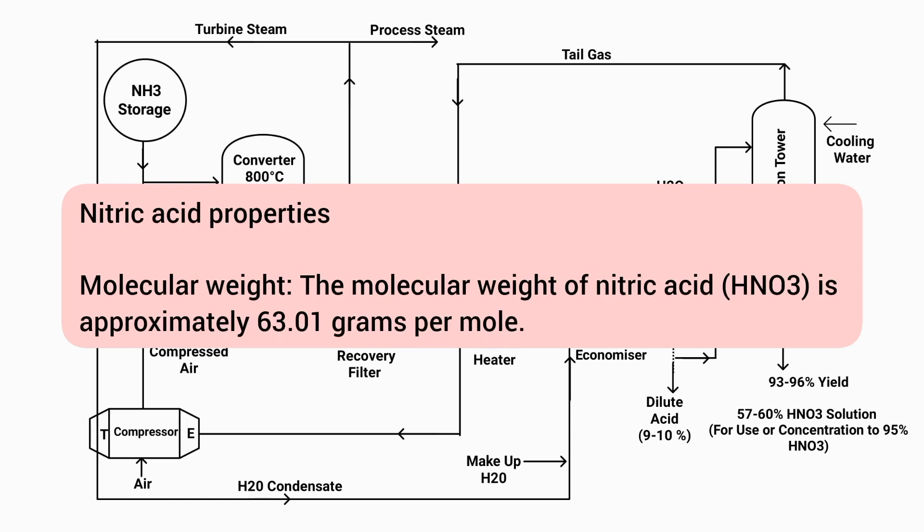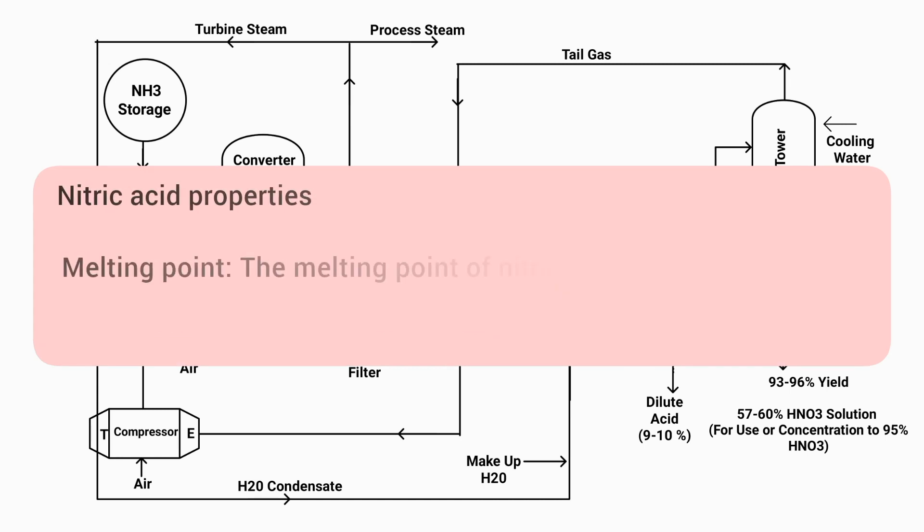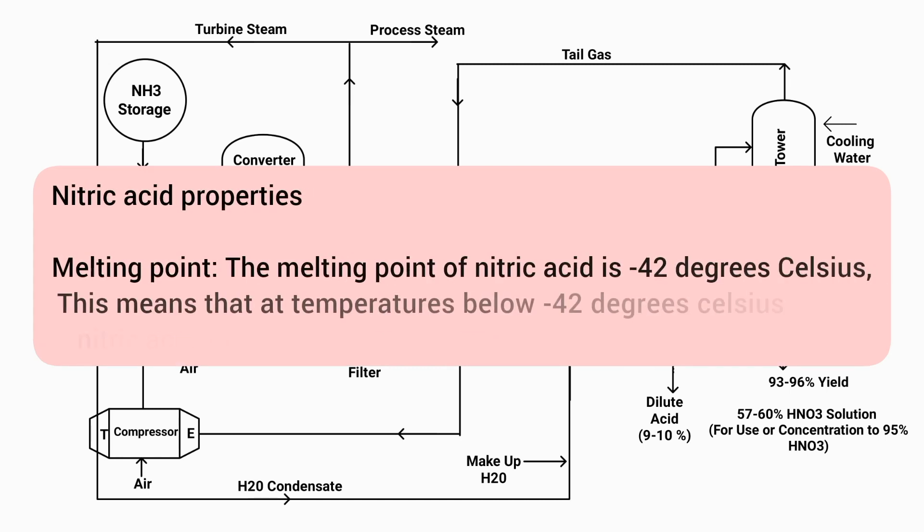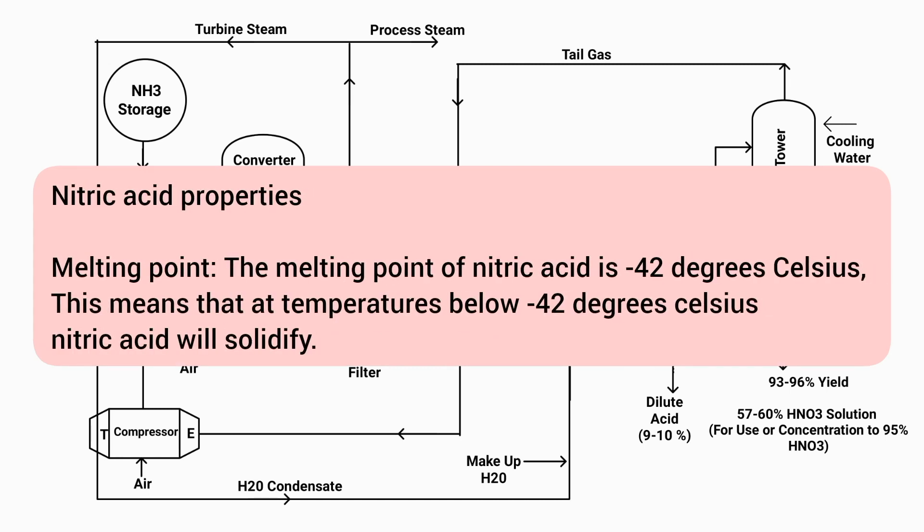The properties of nitric acid are as follows. Molecular weight: the molecular weight of nitric acid, HNO3, is approximately 63.01 grams per mole. Melting point: the melting point of nitric acid is minus 42 degrees Celsius, meaning that at temperatures below minus 42 degrees Celsius, nitric acid will solidify.